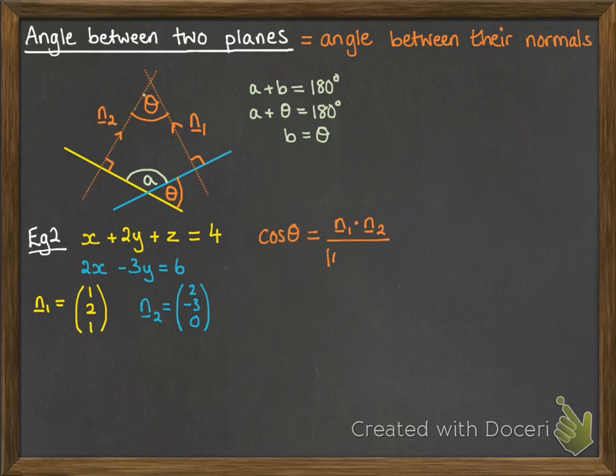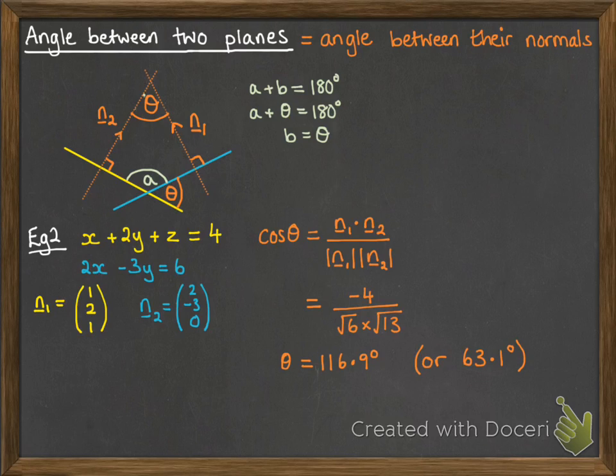And then we use the scalar product to find the angle between them. Now, in this case, the scalar product gave us the obtuse angle. It would depend on the question of what particularly you were being asked for. You might then need to take it away from 180 to make 63.1.